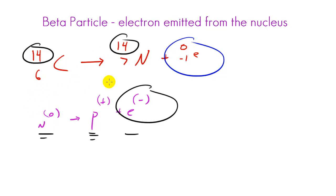However, your atomic number does change because, remember, the atomic number is the number of protons in the nucleus. So that goes from 6 to 7 because you converted a neutron to a proton. Make sense?